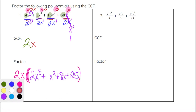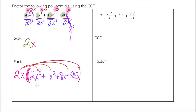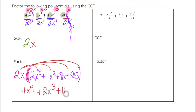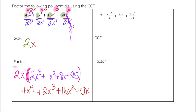If you want to check your answer, you can always distribute the GCF back out. So 2x · 2x³ = 4x⁴, 2x · x² = 2x³, 2x · 8x = 16x², and 2x · 25 = 50x. That confirms we got the correct answer, so our final factored form is 2x(2x³ + x² + 8x + 25).